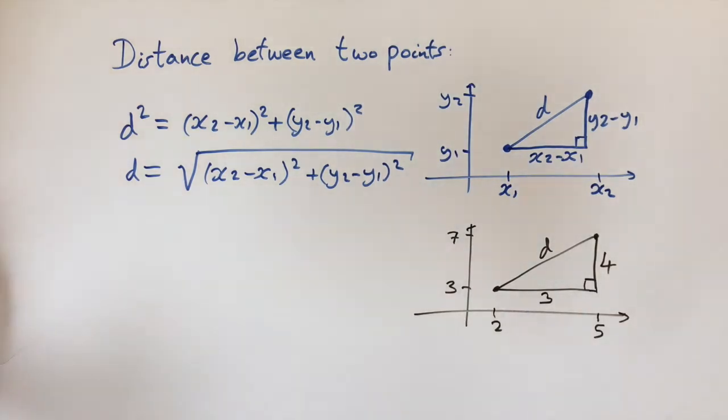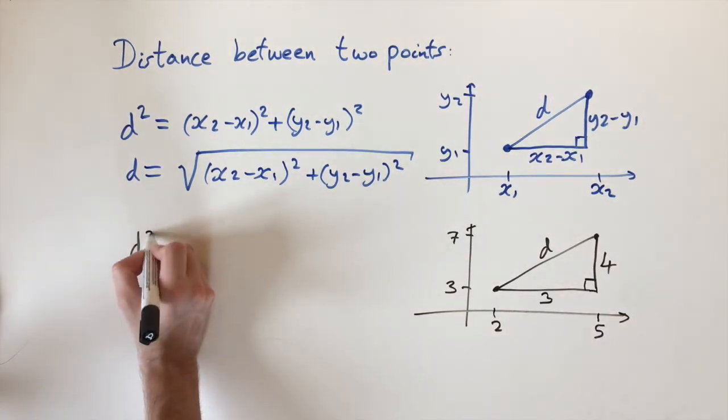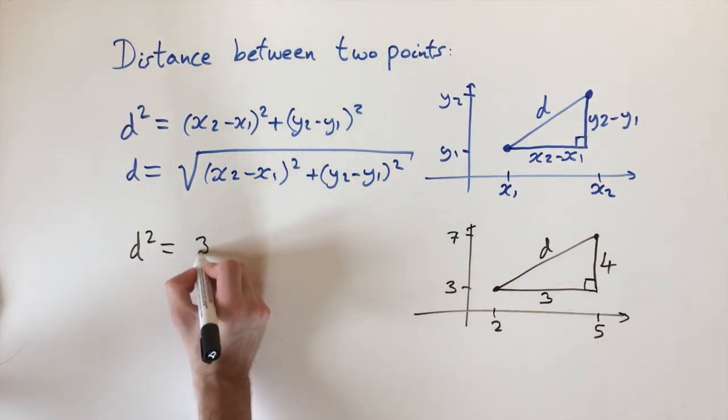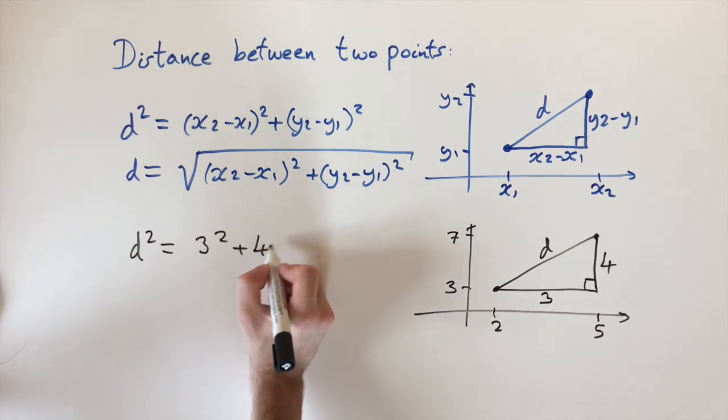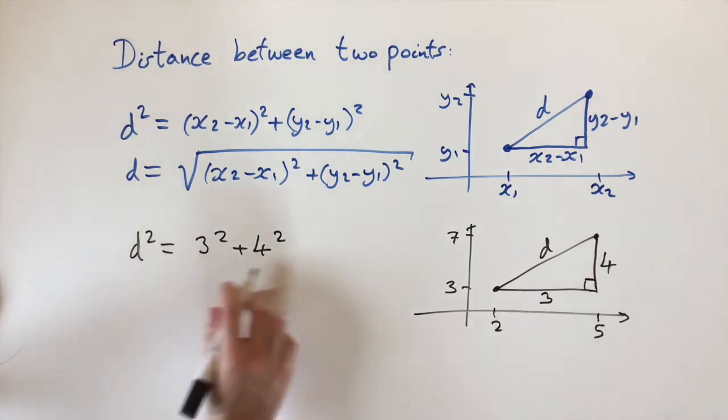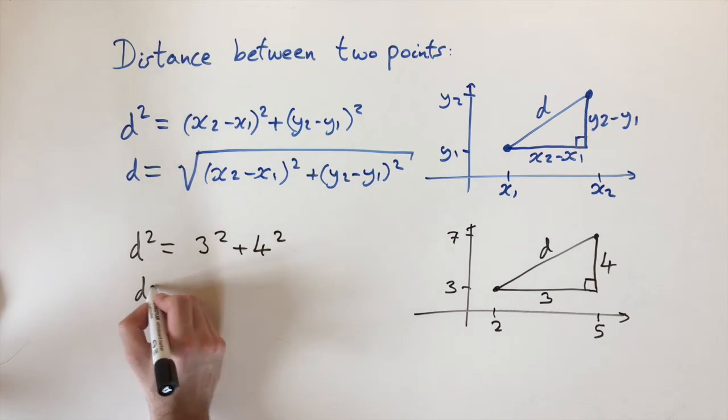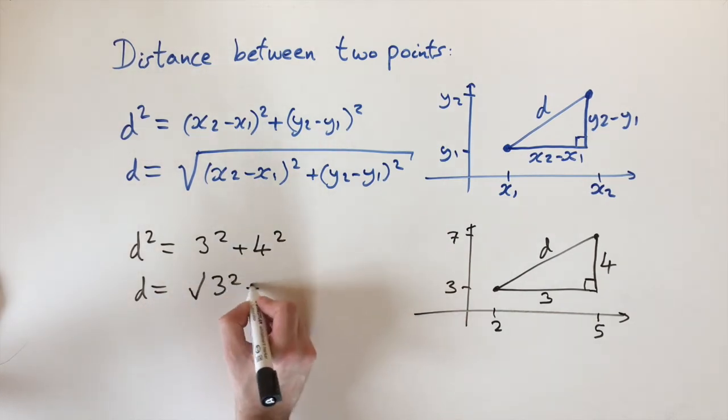And then to find d, we apply Pythagoras' theorem. So d squared equals 3 squared plus 4 squared. And then to find d, we just take the square root. So d equals the square root of 3 squared plus 4 squared.